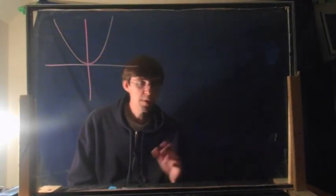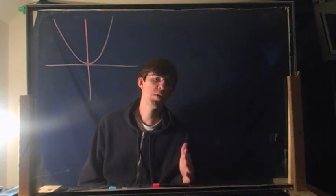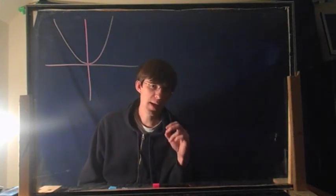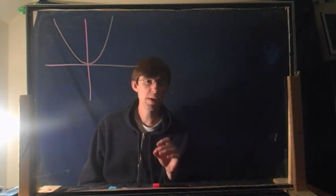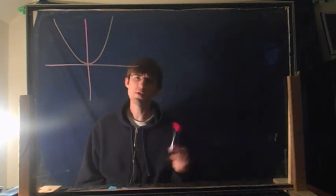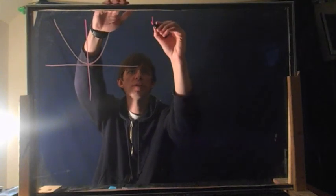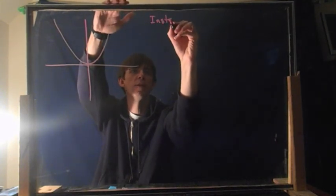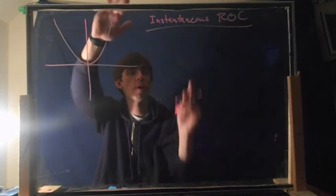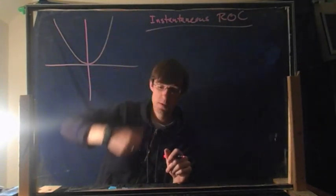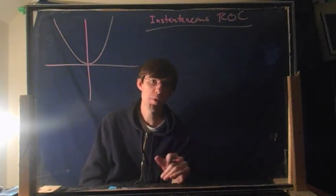Okay, we just talked about the average rate of change from one point to another, right? But people want to know all the time, what is my speed at this instant, not over this span of time, but right now, what is my speed? Let's try and talk about that. That has another name. That's called the instantaneous rate of change. And it's a little more complicated.